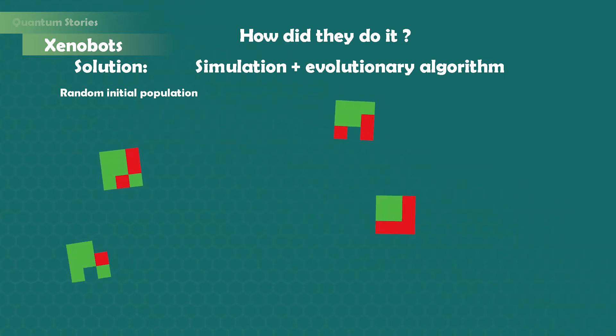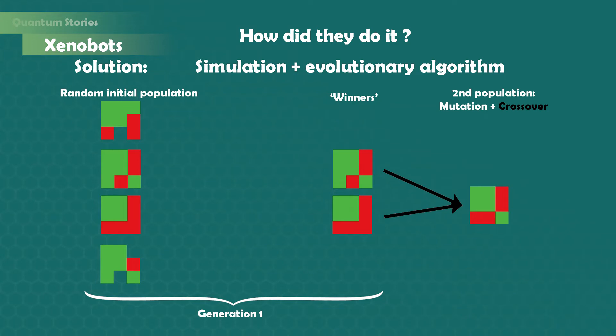Therefore, you select these ones called the best ones or the winners and reproduce them. This means you make babies by mixing the architectures from the winners and you also add some mutations to them by randomly changing some of the cells. This new population is called the second generation and you just run the simulation again on them. And just because they are made from the previous winners, they will just behave a little bit better.